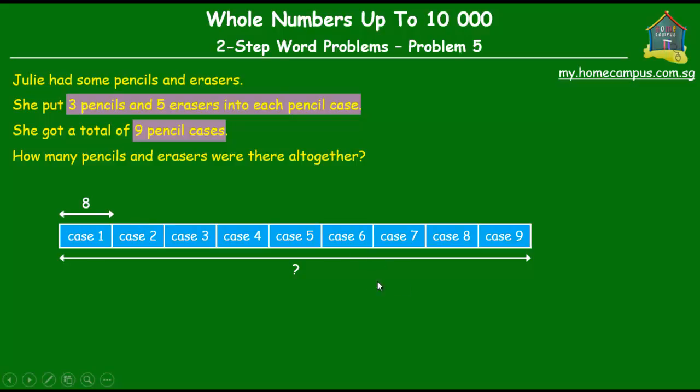So now from here, it's actually quite straightforward. All we have to do is multiply nine by eight, and that will give us the total number of pencils and erasers that were there. Nine pencil cases with eight items in each pencil case.